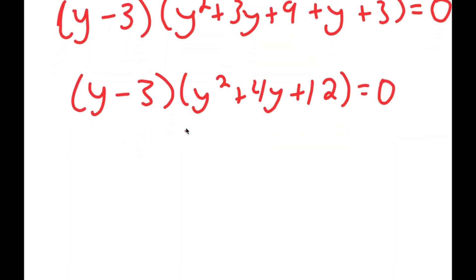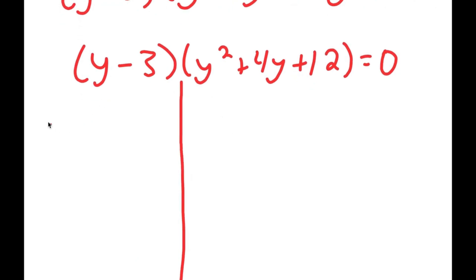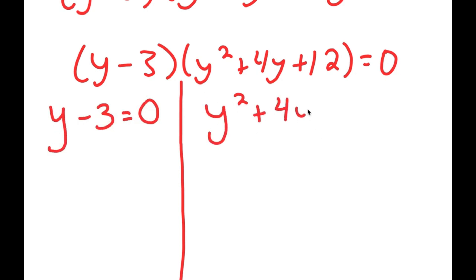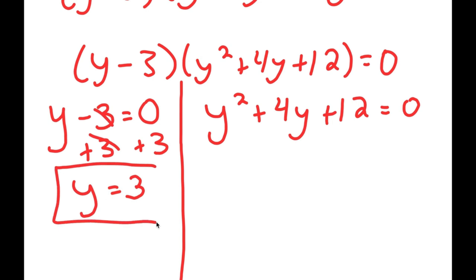This gives me two equations: y minus 3 equals 0, and y squared plus 4y plus 12 equals 0. For the first equation, adding 3 to both sides gives y equals 3, which is my first solution for y.